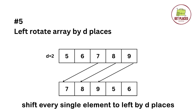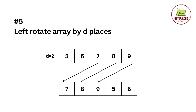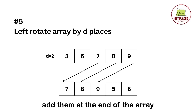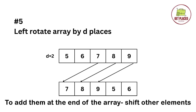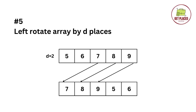Coming back to our problem: left rotate array by d places. We are supposed to shift every single element in the array towards the left side by d places. The array elements are 5, 6, 7, 8, and 9, and we are given d equals 2. So we take 5 and 6, add them at the end of the array, and shift 7, 8, 9 to the left by two places. The result is 7 8 9 5 6.